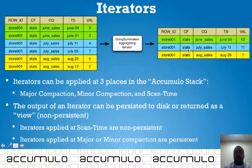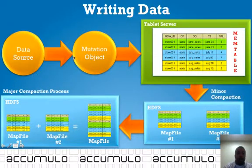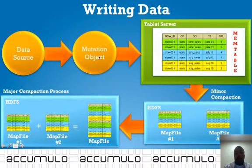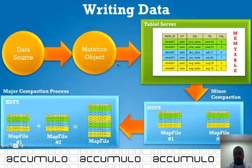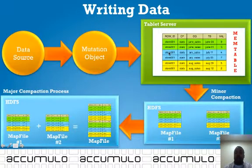Let's look at this more closely. Here we have some arbitrary data source. This data source goes through a mutation object where various parts of the data are assigned to a particular part of the data structure, which creates your table. The mutation object takes data from the data source, transforms it, and loads it into the mem table of your tablet server.